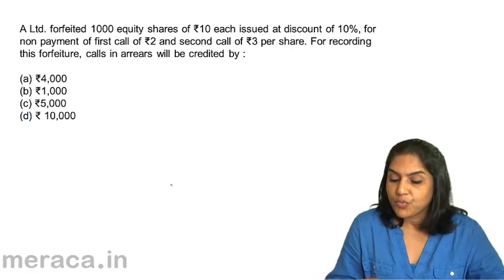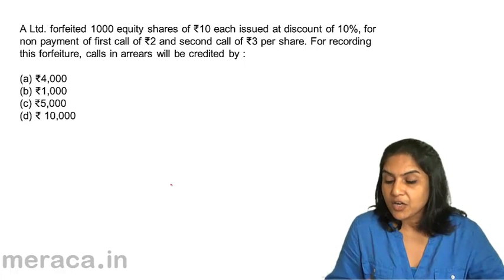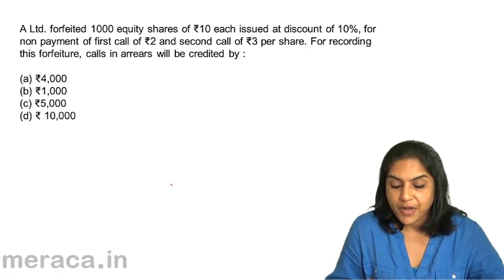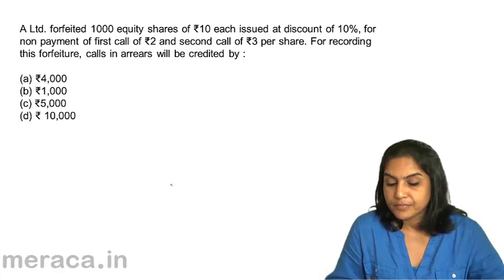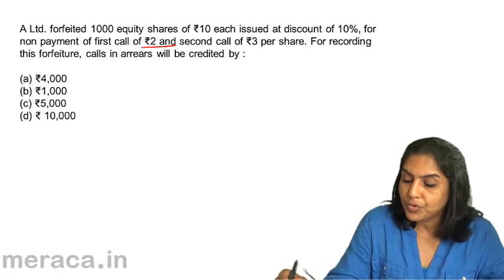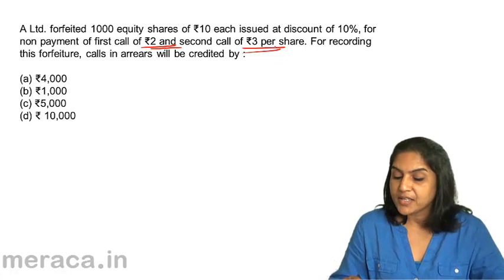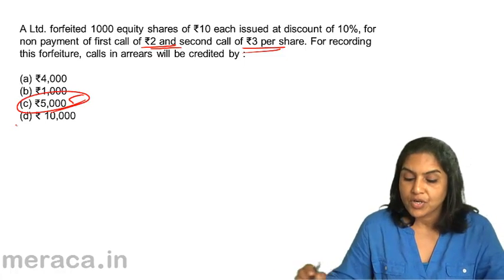MCQ: A Limited forfeited 1,000 equity shares of rupees 10 each issued at a discount of 10%, for non-payment of the first call of Rs. 2 and second call of Rs. 3 per share. For recording this forfeiture, calls in arrears will be credited by: A) 4,000, B) 1,000, C) 5,000, D) 10,000. Non-payment of 2 plus non-payment of 3 = total non-payment of 5. Calls in arrears will therefore be credited with 5 per share, so 5,000. Option C.